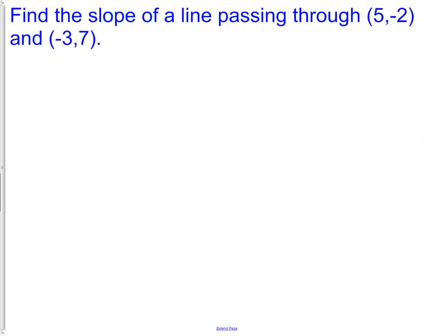Well, if we think of this as a picture, 5, negative 2 would be to the right 5, and down 2. And negative 3, 7 would be left 3, and up 7. So we know that's where our line is at. What we're trying to find is the slope of that line. Once again, we've got to decide which point will be our group 1. I'm going to use the negative 3, 7.